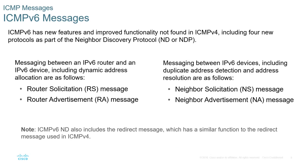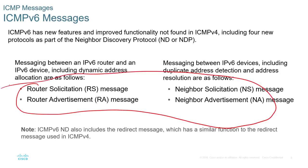ICMPv6 Messages: ICMPv6 has new features and improved functionality not found in ICMPv4, including four new protocols as part of the Neighbor Discovery Protocol, ND or NDP. Messaging between an IPv6 router and an IPv6 device includes dynamic address allocation using Neighbor Solicitation messages and Router Advertisement messages. Messaging between IPv6 devices includes Neighbor Solicitation and Neighbor Advertisement for duplicate address detection and address resolution. ICMPv6 Neighbor Discovery also includes a redirect message with similar function to the redirect messages in ICMPv4.